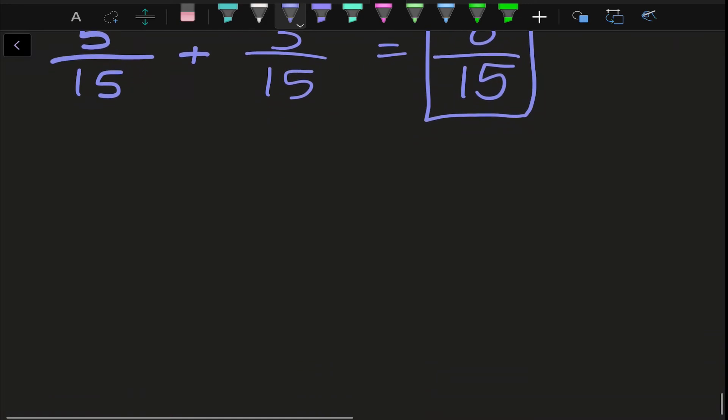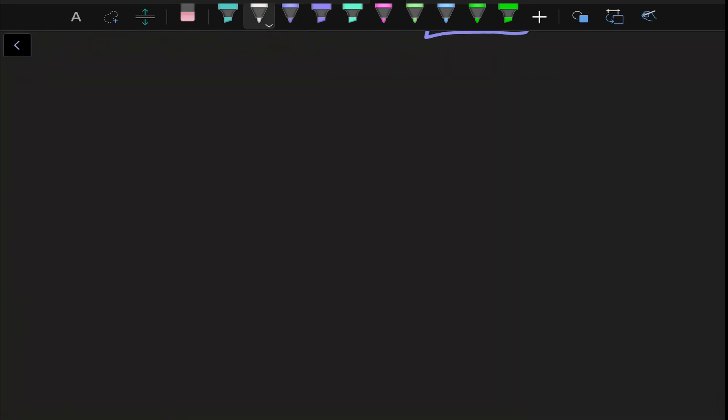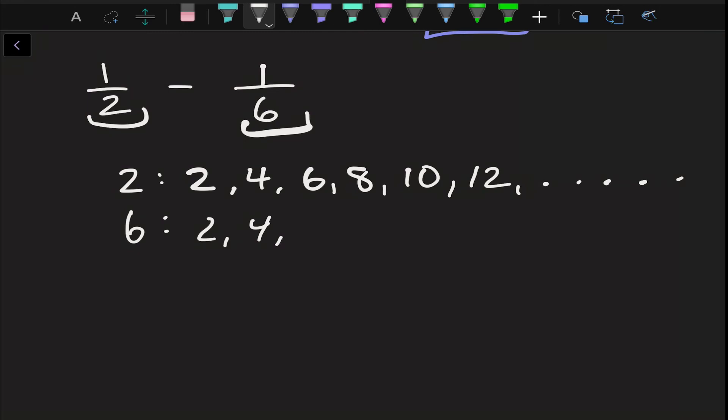Next, let's do some subtraction. We'll start with I have 1 over 2 minus 1 over 6. They're not the same denominator, so what am I going to have to do? Let's look at multiples. 2, 4, 6, 8, 10, 12, and so on. 6, oh, I already see that 6 is in both 2 and 6. So I don't have to change this one, which is super nice. We love when that happens. But 1 half is going to have to switch to a 6 denominator.